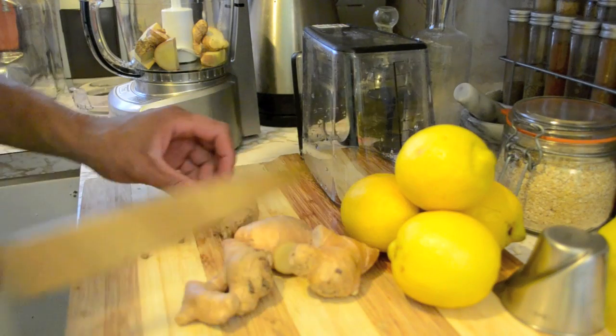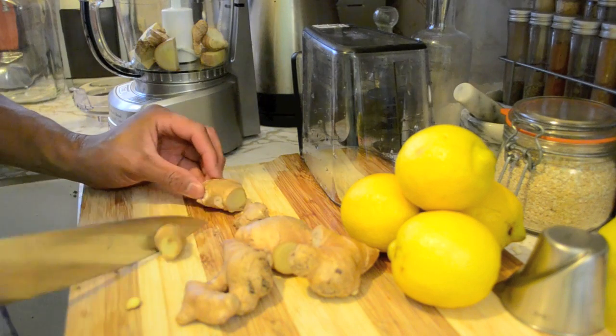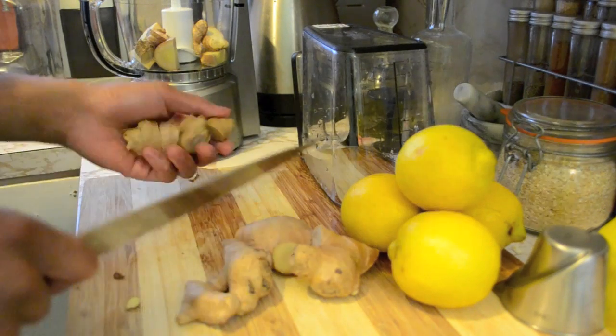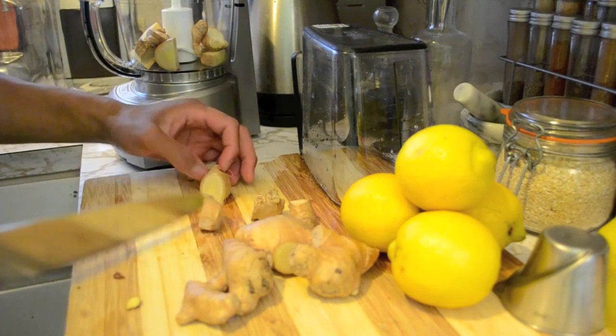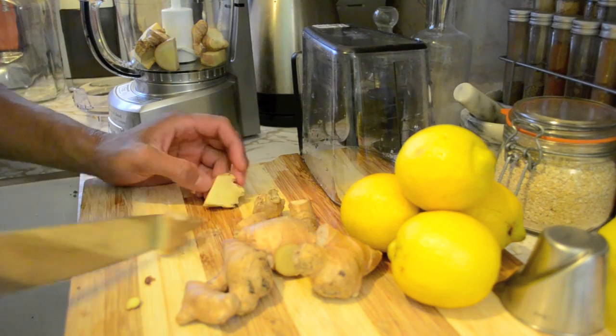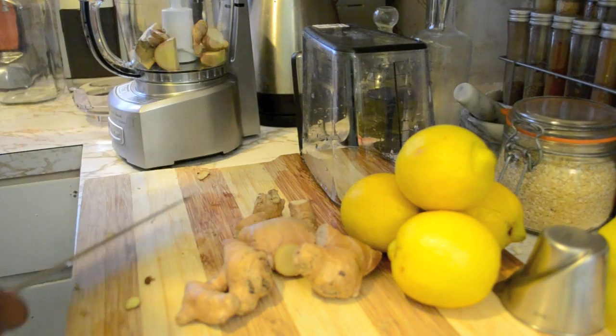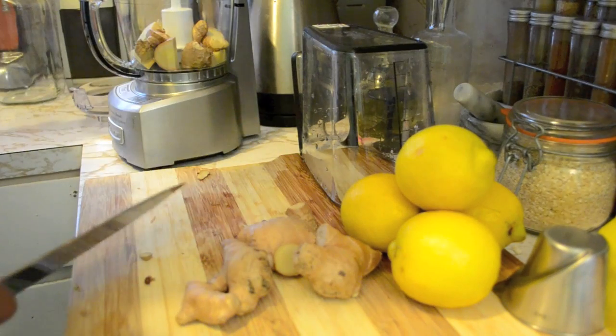Start with a whole lot of ginger, maybe an entire hand of it. What you want to do is chop it up into small manageable pieces, maybe quarter size, maybe half dollar size. What's important is that you get the pieces as small as your food processor can manage.